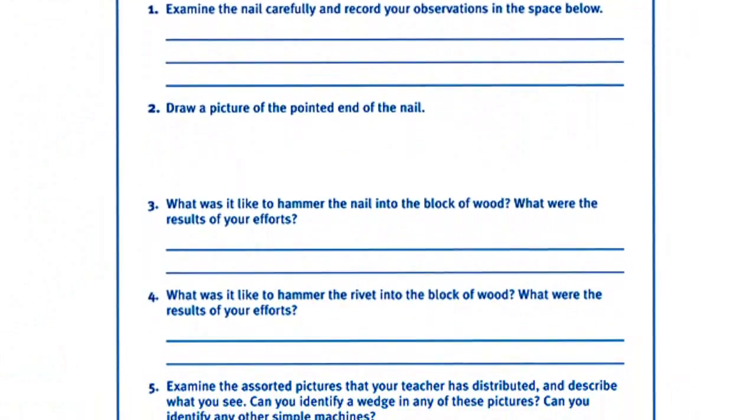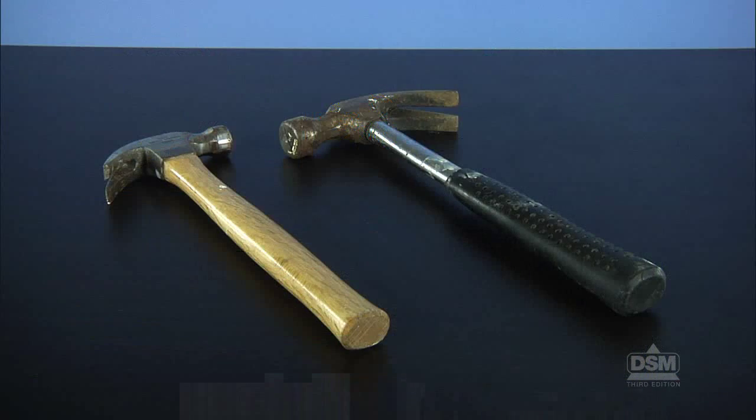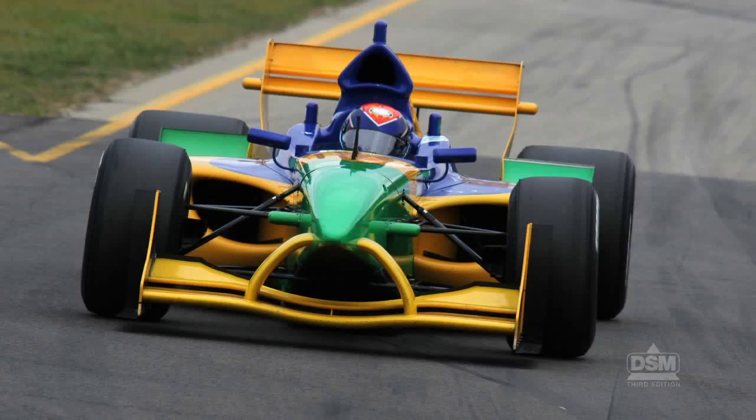To prepare for the activity, make a copy of Activity Sheet 10 for each student. Several days before the activity, gather enough hammers and pictures of boats, planes, and race cars so that each team of four has one.